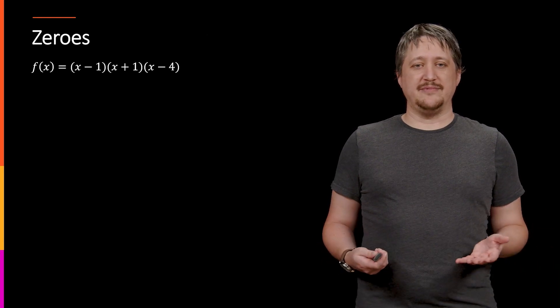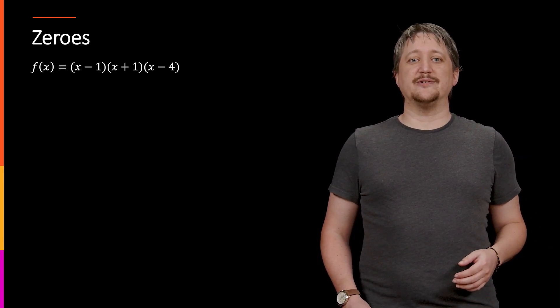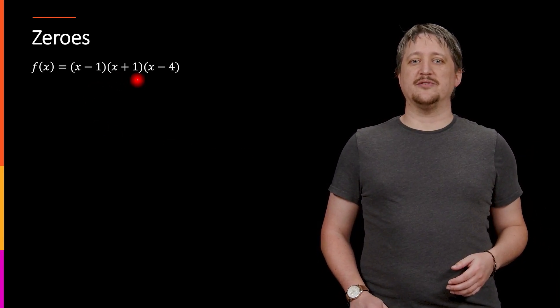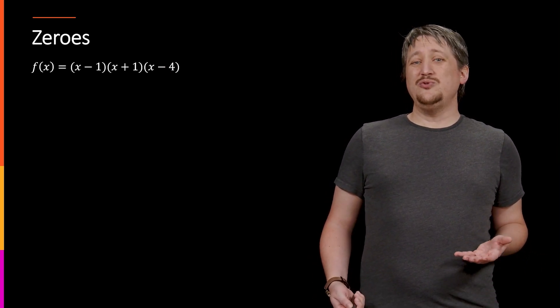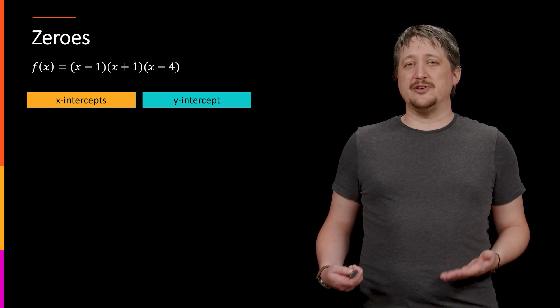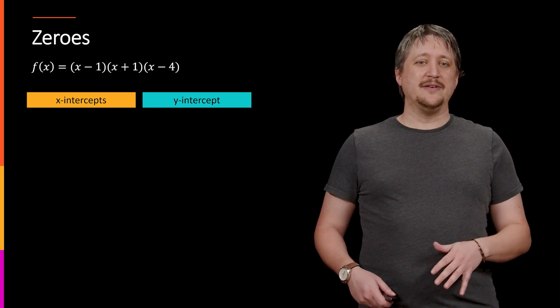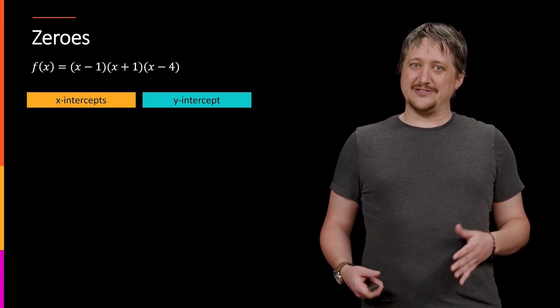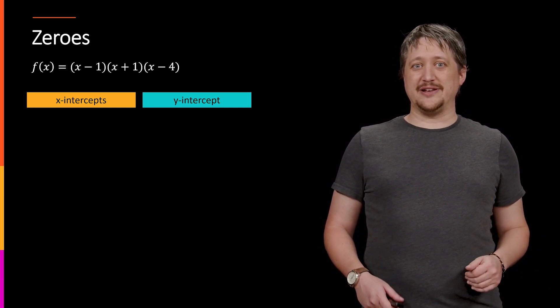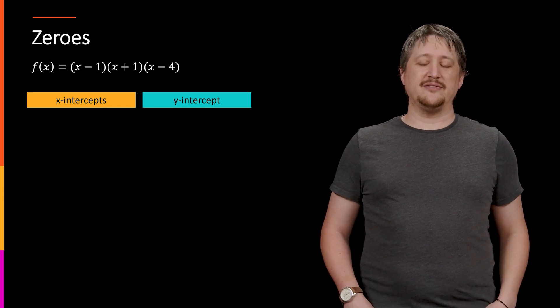If we have a function like f(x) equals this factored thing (x minus 1)(x plus 1)(x minus 4) all being multiplied together, there are two natural things we might want to think about and those are x-intercepts and y-intercepts. Now I say they are natural things but why they are natural is something we're going to get to a little bit later.